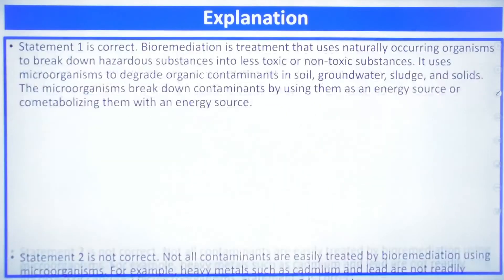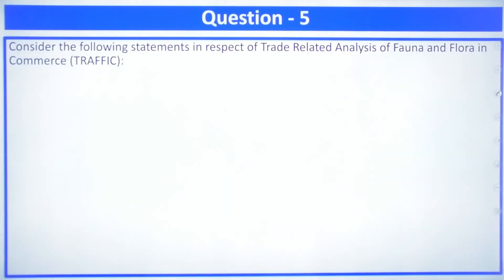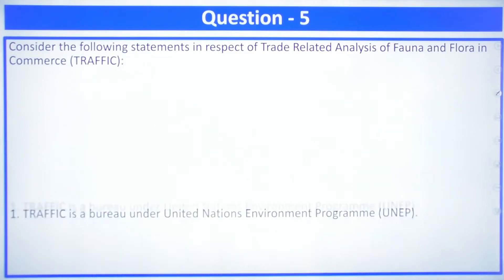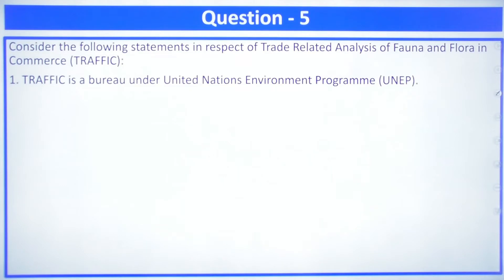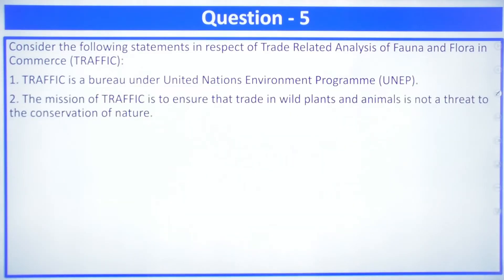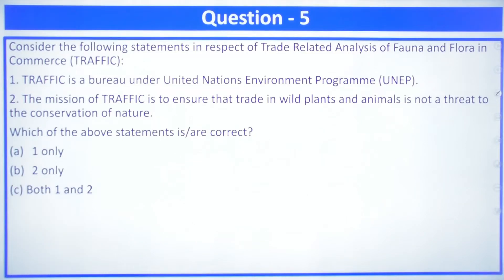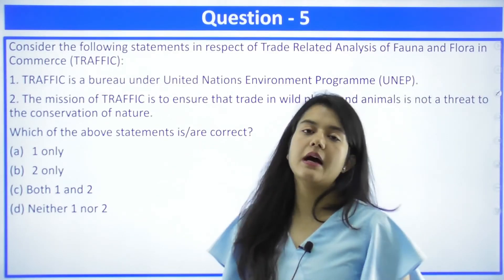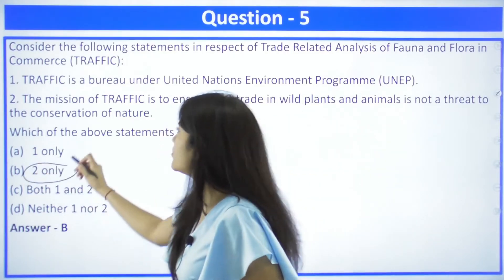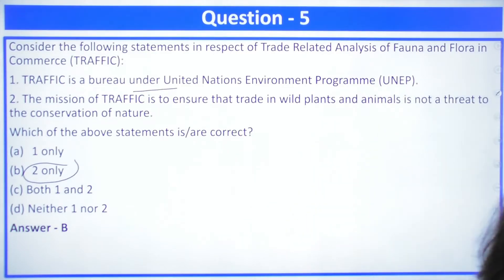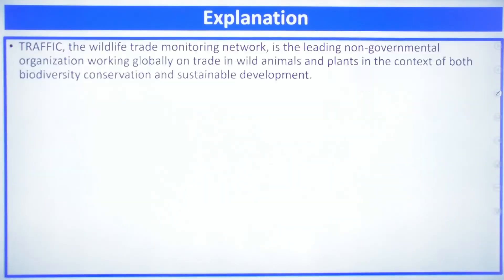Question number 5 is related to TRAFFIC — the Trade Related Analysis of Flora and Fauna in Commerce. First statement: it is a bureau under the United Nations Environment Programme. Second statement: the mission of TRAFFIC is to ensure that trade in wild plants and animals is not a threat to the conservation of nature. The answer is two only, because TRAFFIC is a not-for-profit organization — it is an NGO and does not work under any body. It is the Wildlife Trade Monitoring Network, a leading NGO working globally.